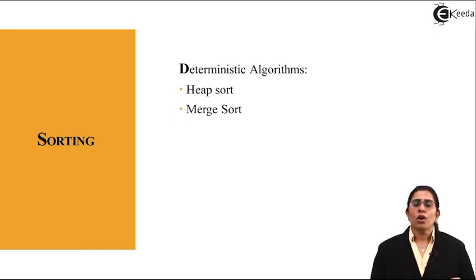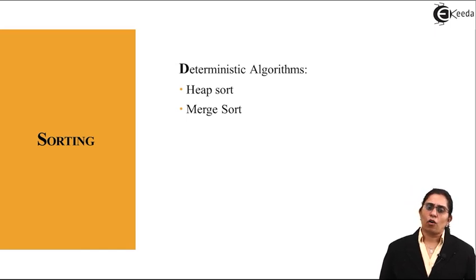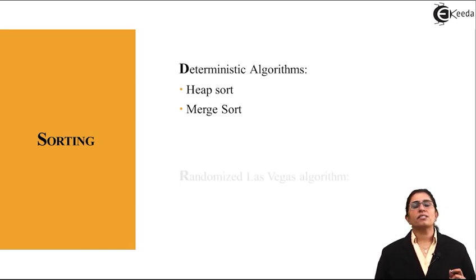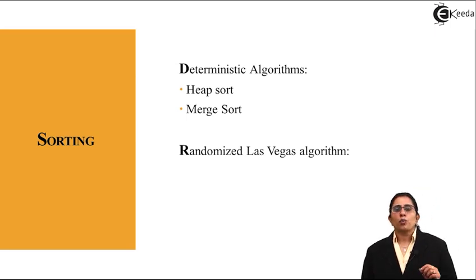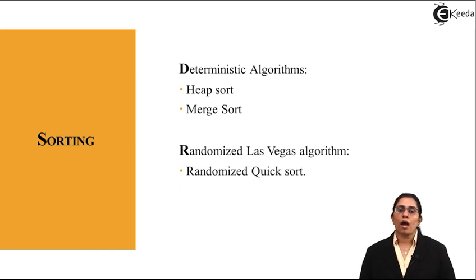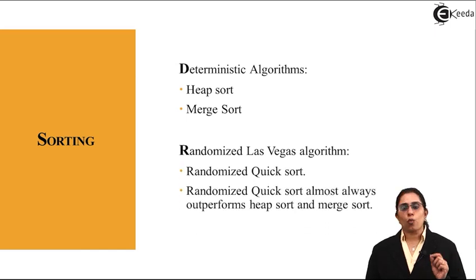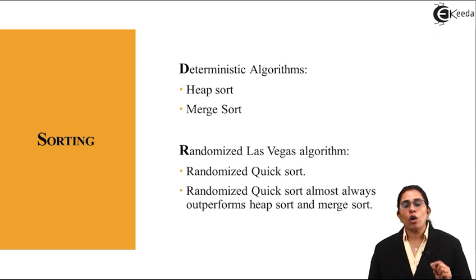When I apply a randomized algorithm which is a randomized Las Vegas algorithm, the sort which is implemented using it is a quick sort. A randomized quick sort is always better or it always outperforms the heap sort and the merge sort.